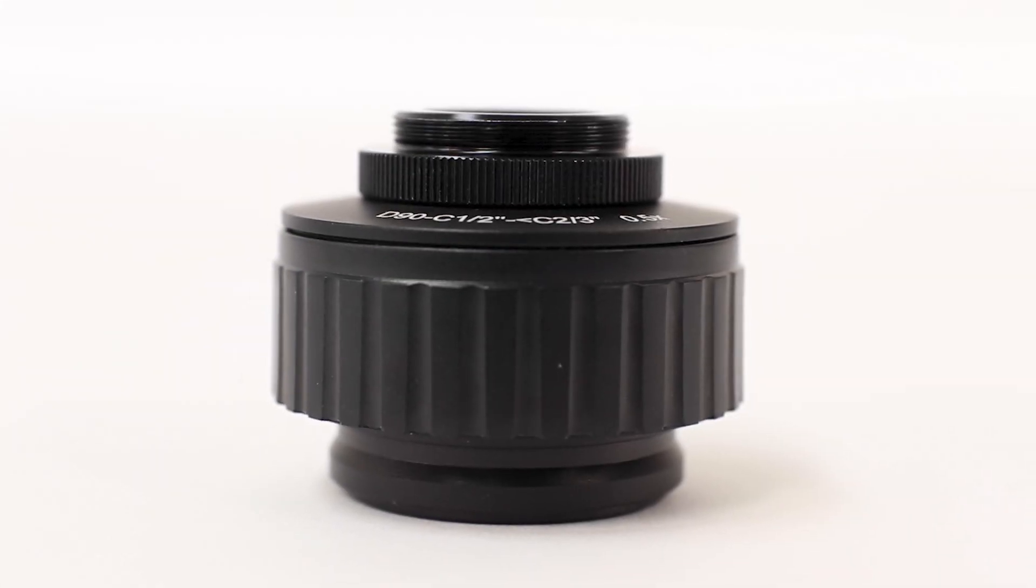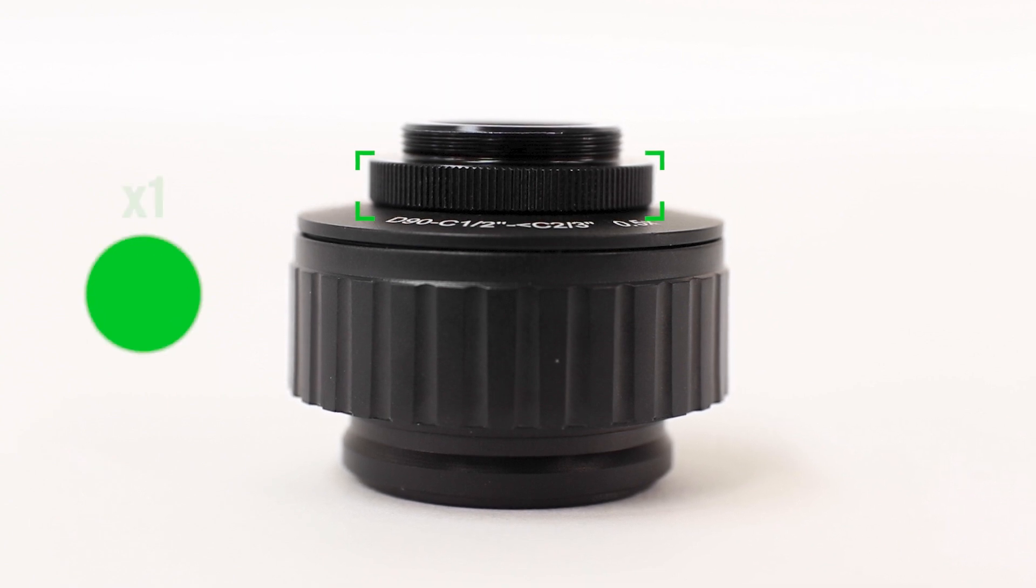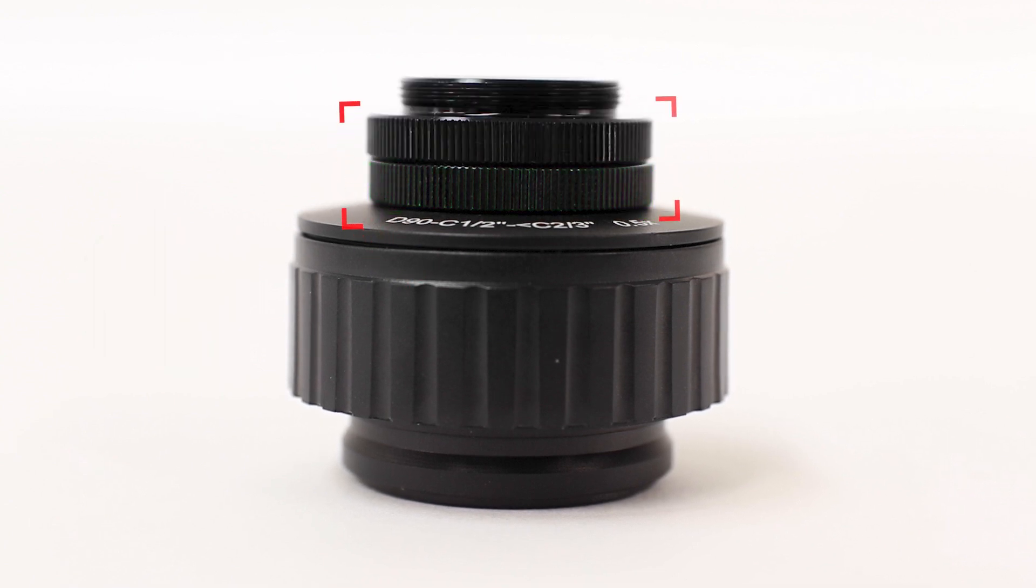MODIC C-mounts usually come with a CCS ring attached and the camera package includes another one. Make sure only one CCS ring is mounted when attaching the camera.